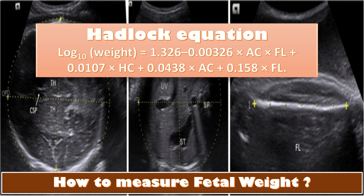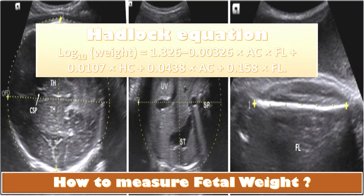Continuing the Hadlock formula: plus 0.0107 multiplied by head circumference, plus 0.0438 multiplied by abdominal circumference, plus 0.158 multiplied by femur length. While doing fetal biometry, we also check the amniotic fluid volume.